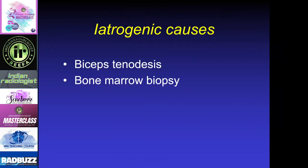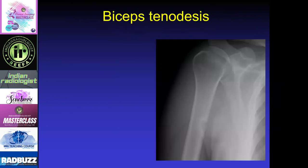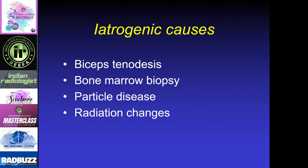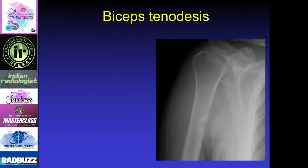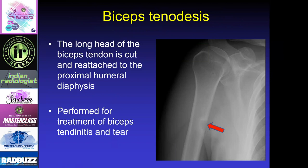Iatrogenic causes — there are a number of things we do to patients that can lead to findings in bone that look suspicious for bone tumors. One is biceps tenodesis, which is one of my biggest pet peeves because we see this all the time, and often the radiologist never looked at the clinical history and never figured out that the person had surgery. This comes to us as an aggressive lesion in the humerus needing biopsy — but if you just look at the clinical history or talk to the patient, you'd realize this is at the site where the biceps has been reattached to the humerus.